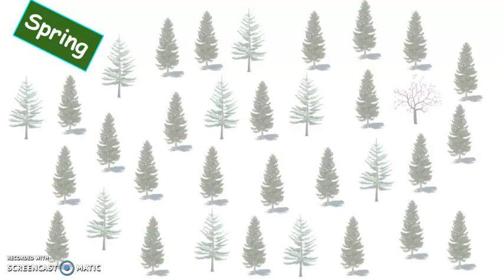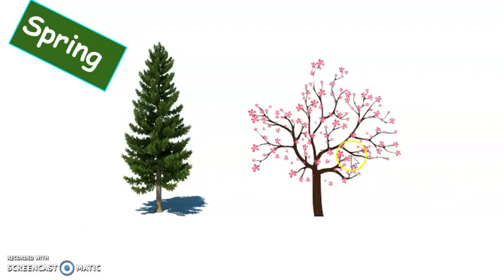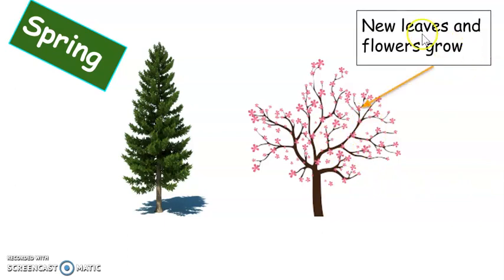Okay, this is the first one. It is spring. What does a deciduous tree look like in spring? Are you ready? Go! There it is — there's the deciduous tree. This is the deciduous tree because it is growing new leaves and flowers. The evergreen tree is green — it doesn't change.